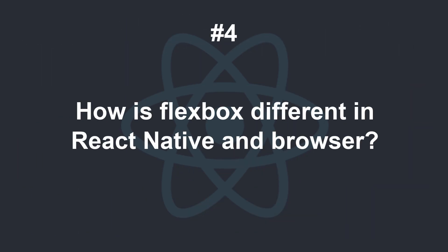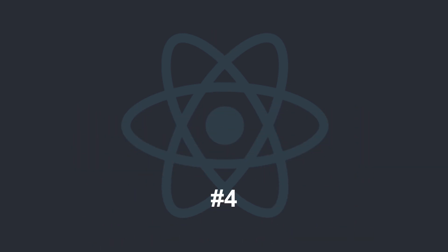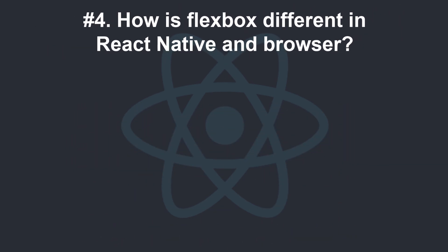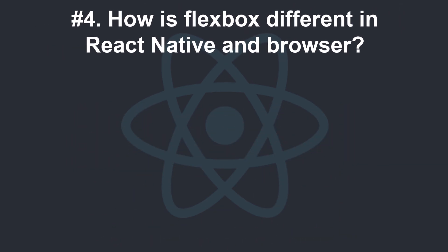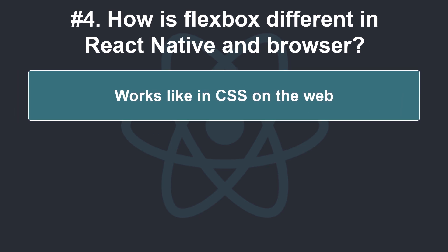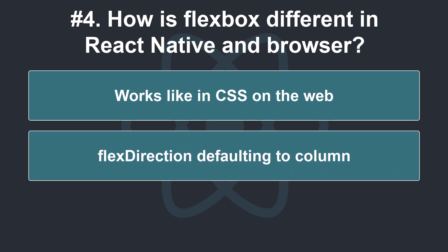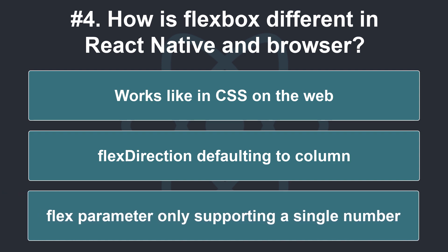How is Flexbox different in React Native and the browser? Flexbox works the same way in React Native as it does in CSS on the web, with a few exceptions. The defaults are different, with flex direction defaulting to column instead of row, and the flex parameter only supporting a single number.